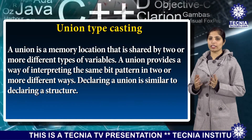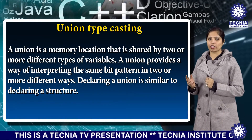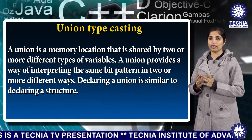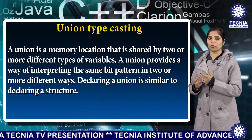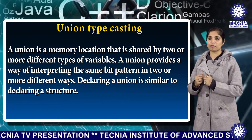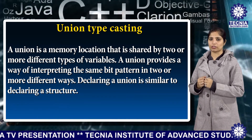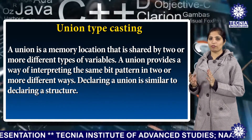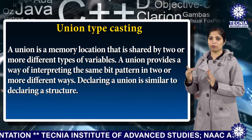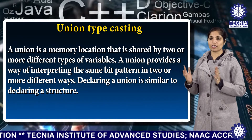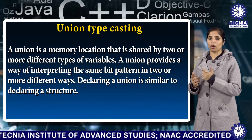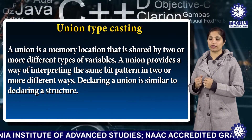A union is a memory location that is shared by two or more different types of variables. A union provides a way of interpreting the same bit pattern in two or more different ways.